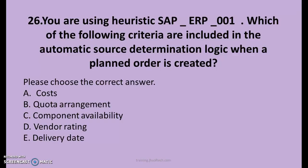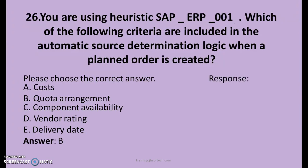Question number 26. You are using heuristic SAP_ERP_001. Which of the following criteria are included in the automatic source determination logic when a plan order is created? The options are: A. Costs, B. Quota arrangement, C. Component availability, D. Vendor rating, E. Delivery date. The answer is B. Quota arrangement.